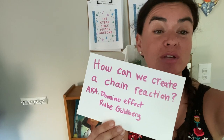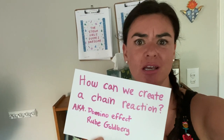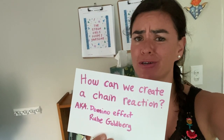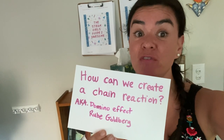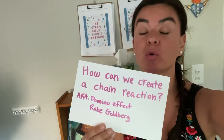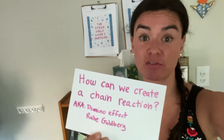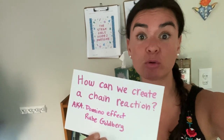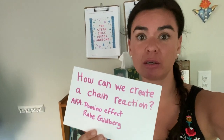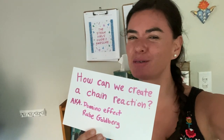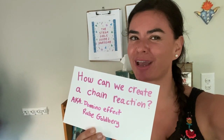Hey scientists, today we're answering the question: how can we create a chain reaction? You may also have heard this described as a domino effect or Rube Goldberg. Basically, we're just trying to knock over a bunch of objects in a sequence, which means one right after the other. Let's see what we were able to create.